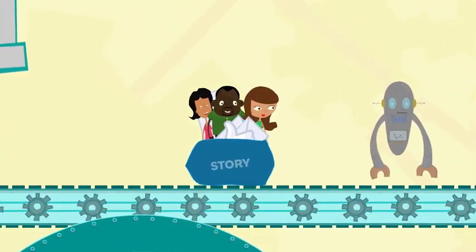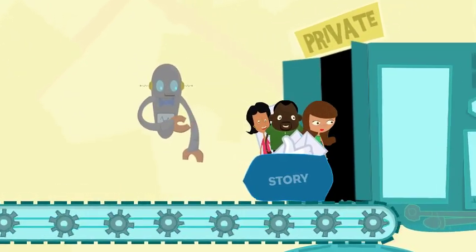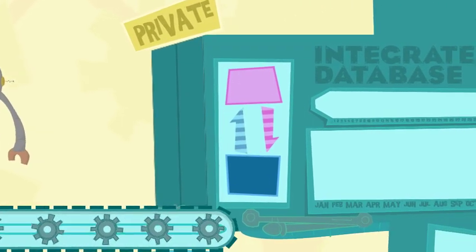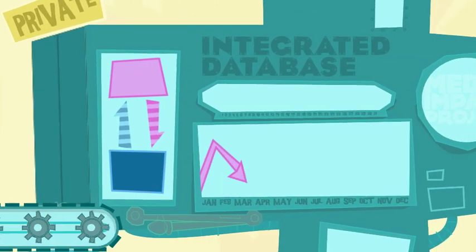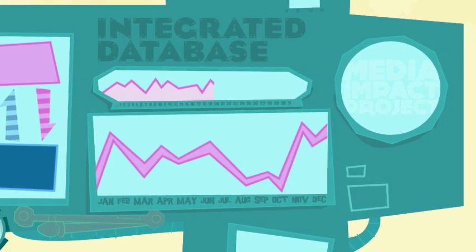The Media Impact Project Measurement System feeds all this data into an integrated database that's unique to your organization. Your story is compared to others with similar goals or content, and all that data is tracked over time, so you get a real sense of how your reach and impact are spreading.